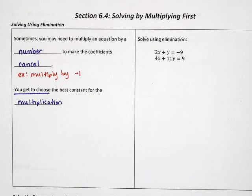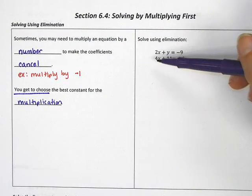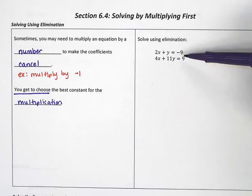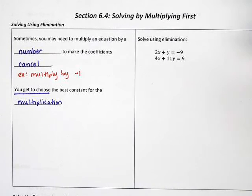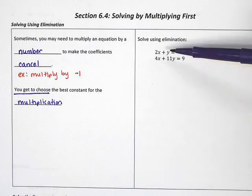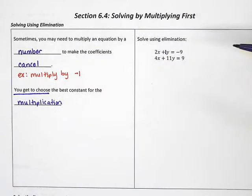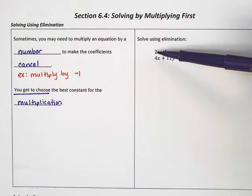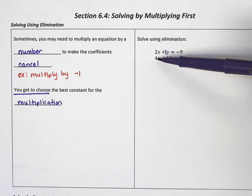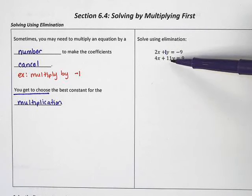Solve using elimination. When I see elimination, I know I better make sure everything is lined up — the x's, the y's, the equals, and the numbers are all lined up. But now if I look at the numbers, 2 and 4 will not cancel. There's an invisible 1 by the y which will not cancel the 11. And multiplying by negative 1 will not help me. If I change this to a negative 2, it's still not going to cancel the 4. If I change this to a negative 1, it's still not going to cancel the 11.